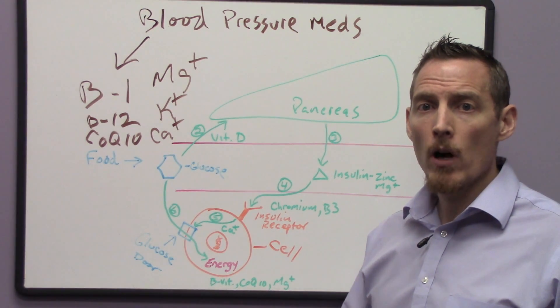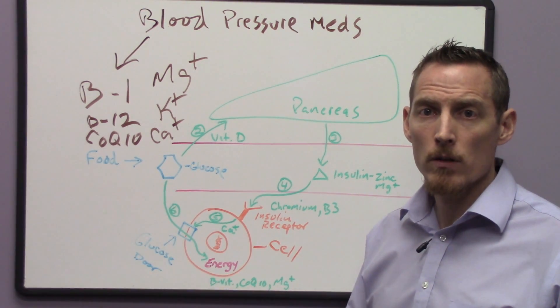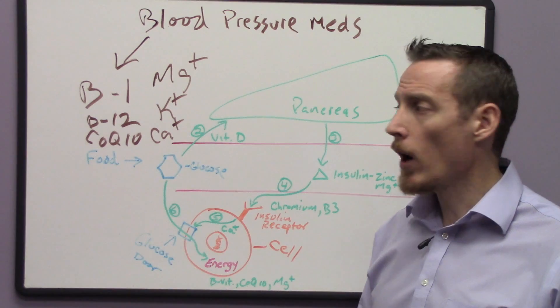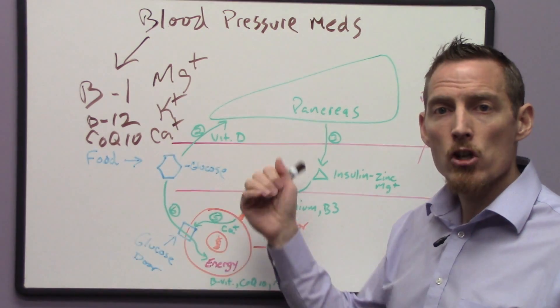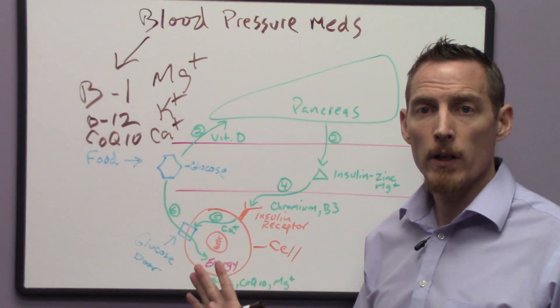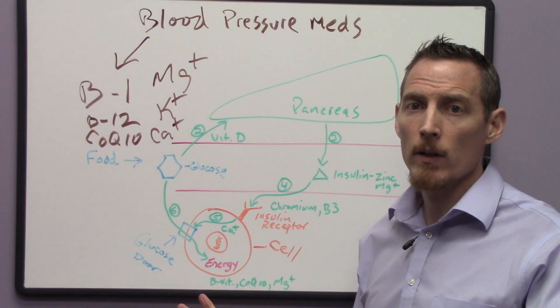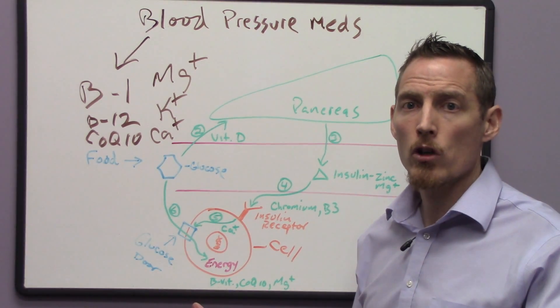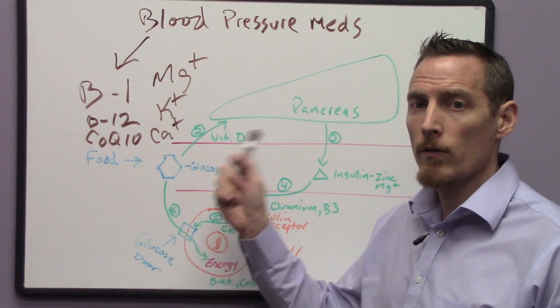Remember, you don't have a blood sugar problem because you have a medication deficiency. Typically, you have a blood sugar problem because of some of the issues that we've talked about in the last two videos. Go back and watch part one if you haven't because it goes into much greater detail about the nutritional parameters and aspects of this.